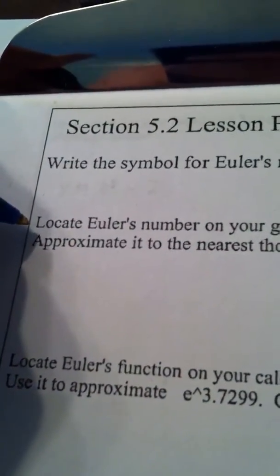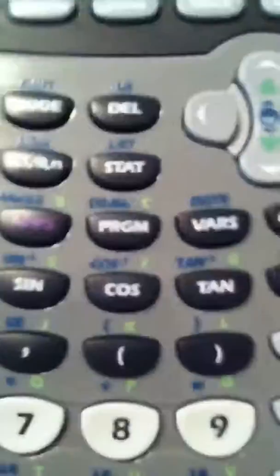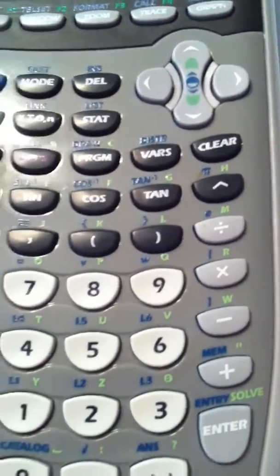Okay, next, locate Euler's number on your graphing calculator and approximate it to the nearest thousandth. So, let's take out our graphing calculator. Now remember, we're looking for Euler's number.